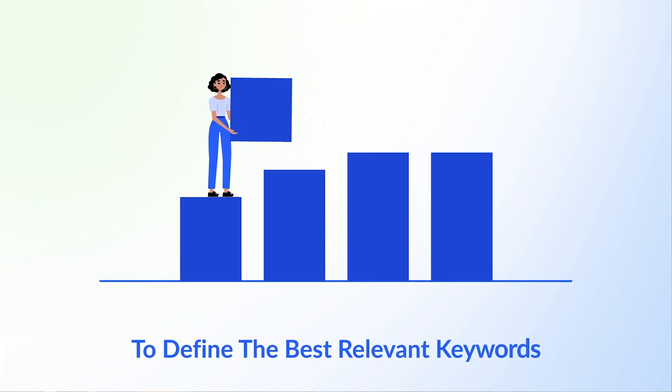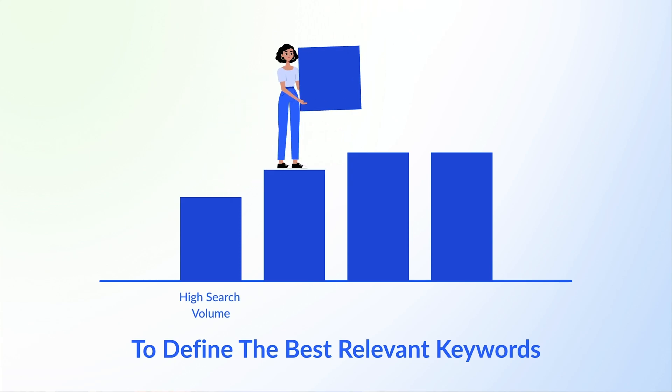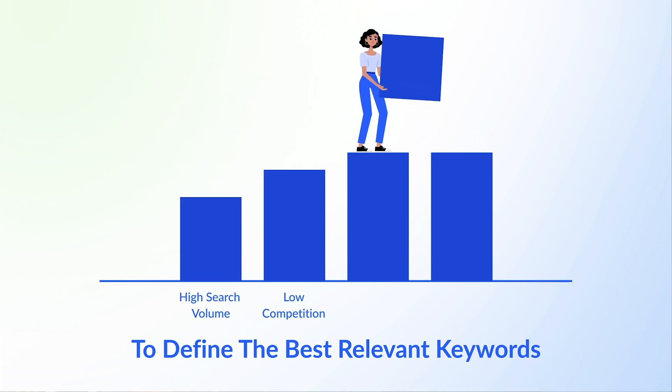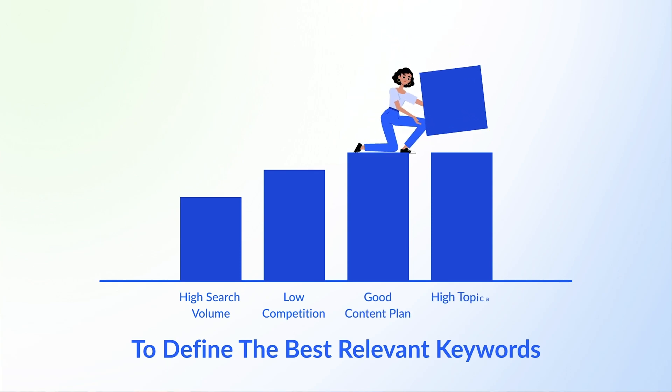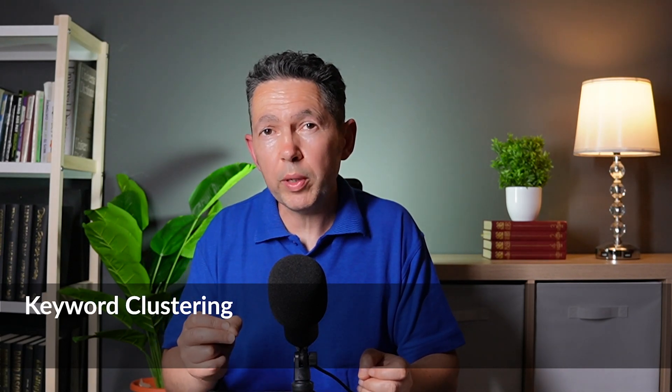So once you define the best relevant keywords with high search volume and low competition, the next step is to devise a good content plan to help your website build topical authority. A great strategy to help with this is called keyword clustering, and we'll be covering that in the next chapter: Advanced Keyword Research.